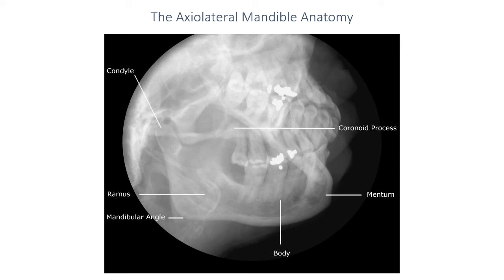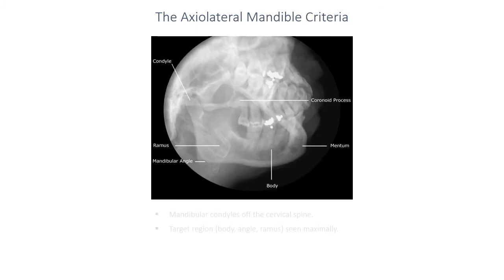This is a very pretty projection once it's performed well. The entirety of the patient's mandibular condyle, angle, ramus, and body — almost all the way up to the mental symphysis — can be projected clear of the rest of the skull. The target side is shown well, but the non-target side is projected way off the top of the image. You will get some superimposition over the hyoid bones, which is normal. The criteria require showing the mandibular condyle off the cervical spine, with the affected side body, ramus, and mandible visible maximally. This projection will be performed bilaterally, as there are likely to be multiple fractures over the mandible.